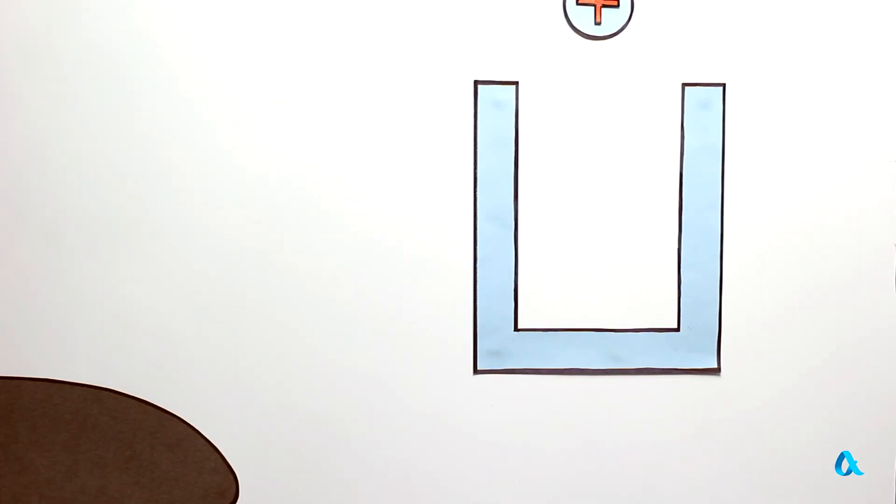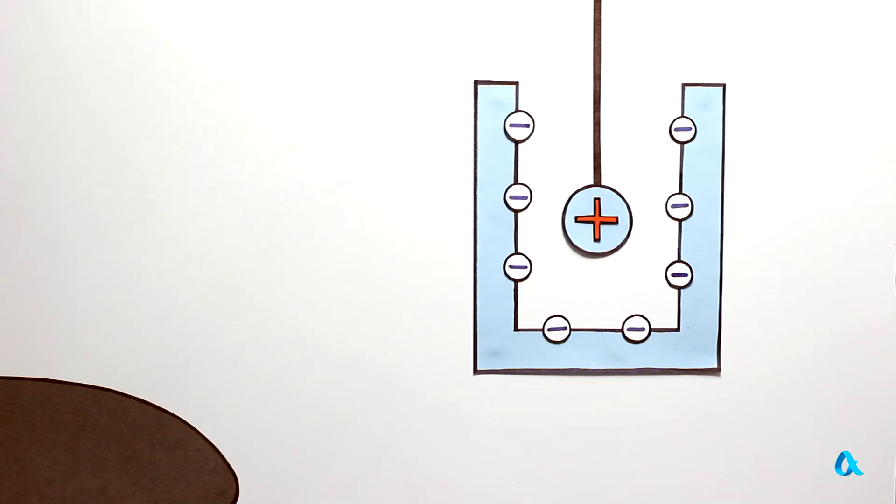When we put a positive charge inside a metal cage, negatively charged electrons get attracted to it and move to the inner surface. The cage's total charge though still equals zero, so the outer surface of the cage turns out to be positively charged.